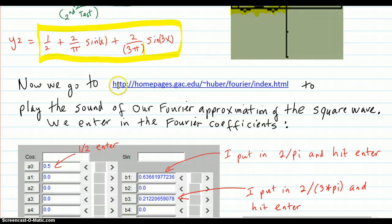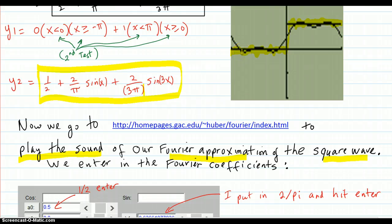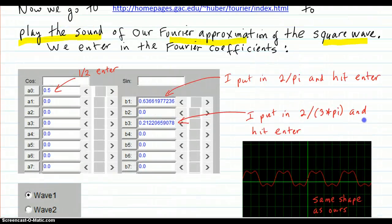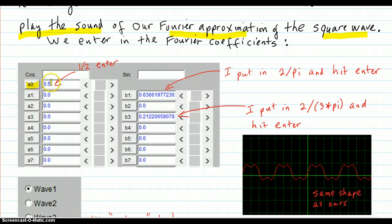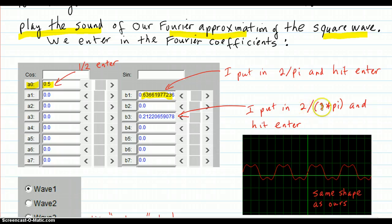Now we're going to go to the Fourier player site and play the sound of our Fourier approximation to the square wave — actually play the sound to hear what it sounds like when you take this kind of voltage and put it through a speaker. You enter in your A0: I put in one divided by two and hit enter. Then I put in B1 — two over π. Then for B3 I put two over parentheses three times π, hit enter, and it gave me the decimal value.